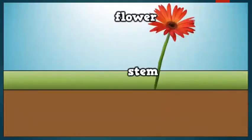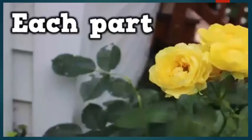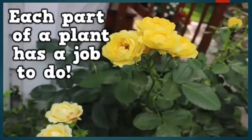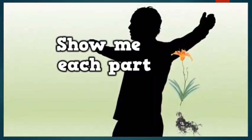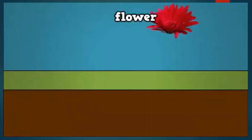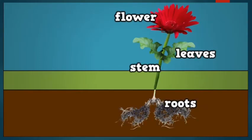Flower, stem, leaves, and roots — each part of a plant has a job to do. Show me each part as you sing this too. Flower, stem, leaves, and roots.